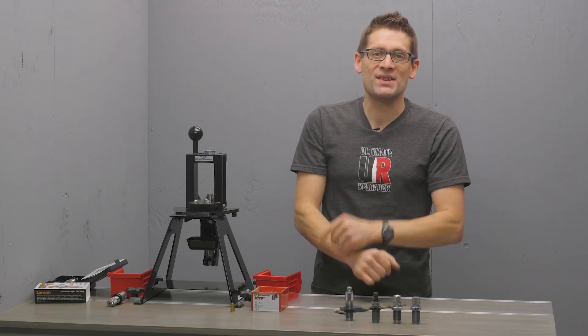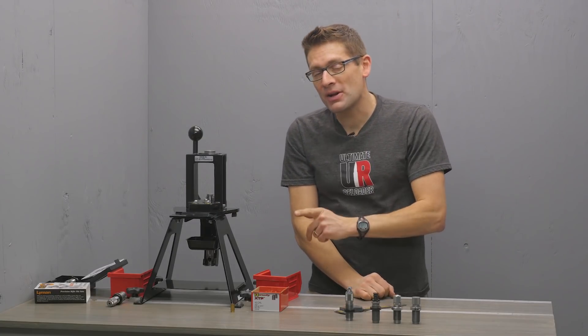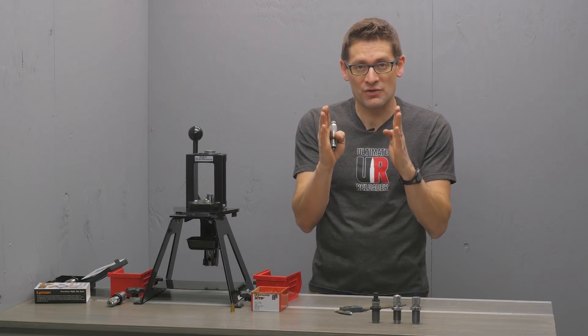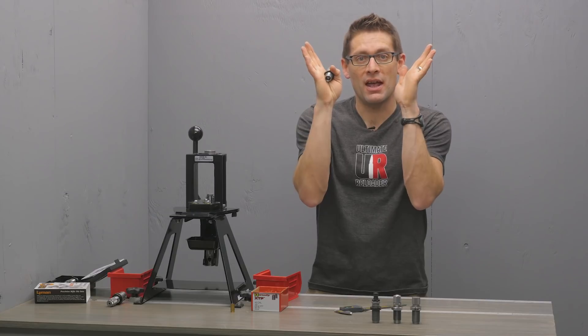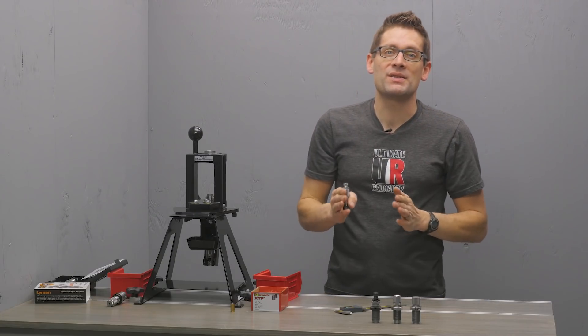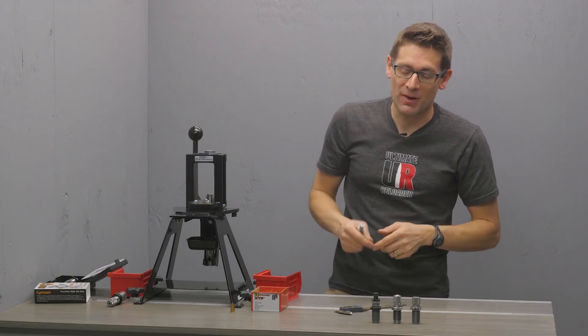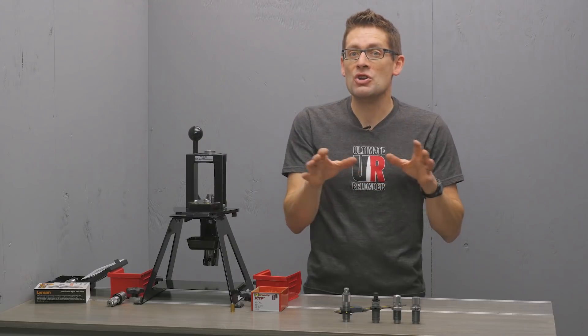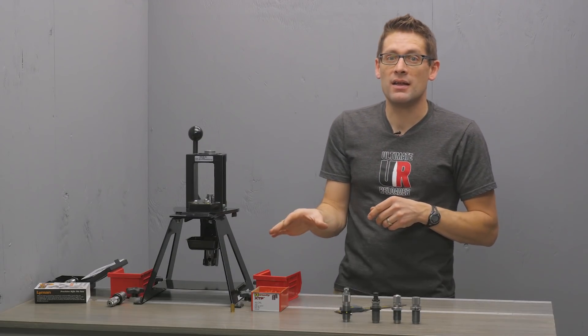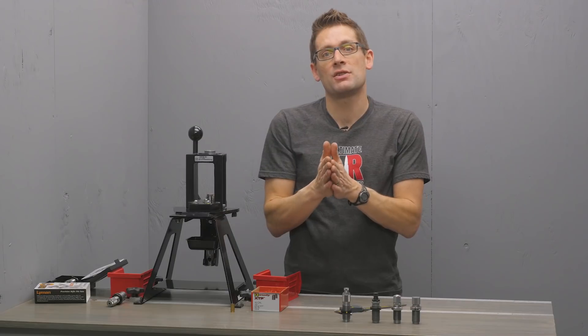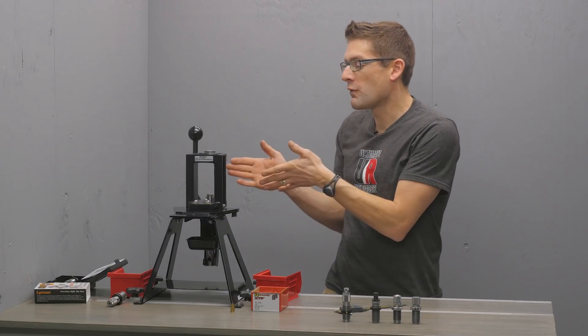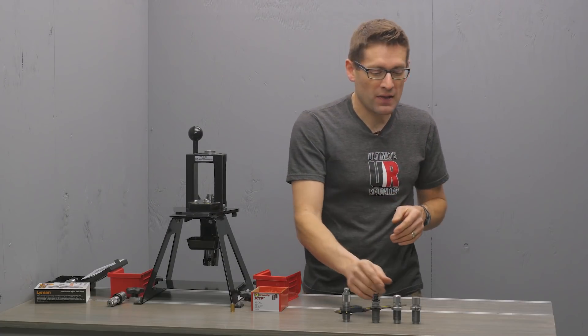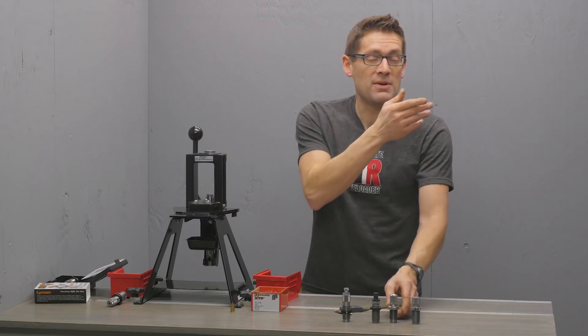So there you go. Pistol case expansion in a nutshell. Now there are a couple other considerations to think about. If you're using a bullet feeder, the multi-step design with the straight expanded section and then the trumpeted section at the case mouth is going to work a little bit better because of how bullet feeders place bullets into cases. Also, the setup instructions do vary and there are nuances between how they're set up between one brand and the next. So you're going to want to check the instructions that came with your die. But overall the principles that we talked about here apply, including with powder through expander dies like the Lee or the Hornady PTX expander.